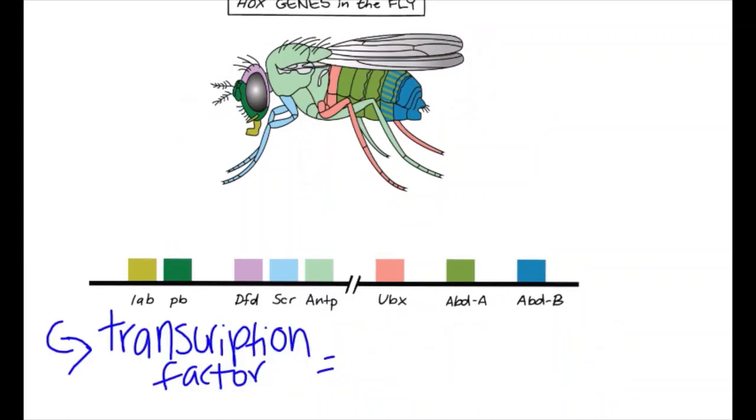In order to prevent such mutations, homeotic genes encode a transcription factor that is expressed in a specific region of the fly starting early in its development as an embryo. The transcription factor changes the expression of target genes to enact the genetic program that's right for each segment.